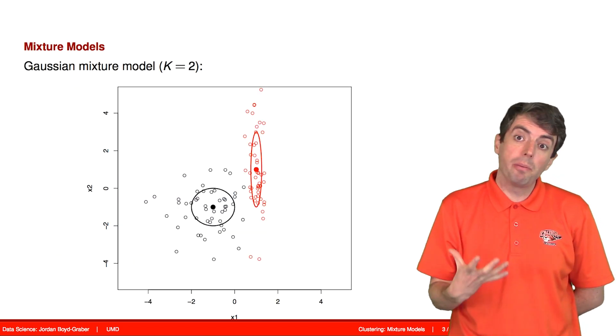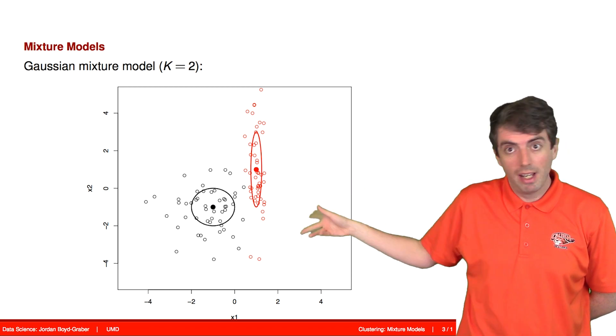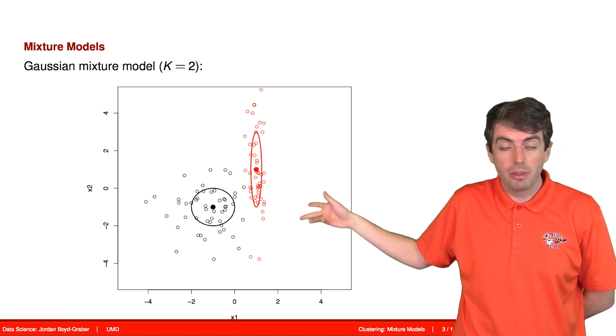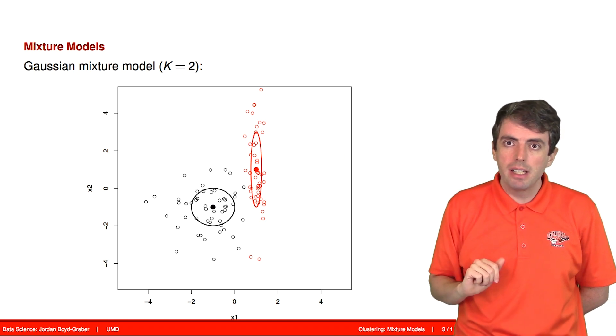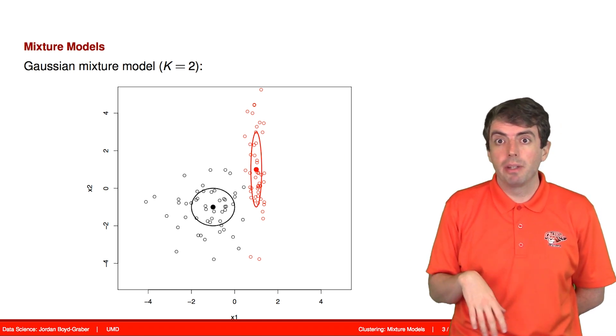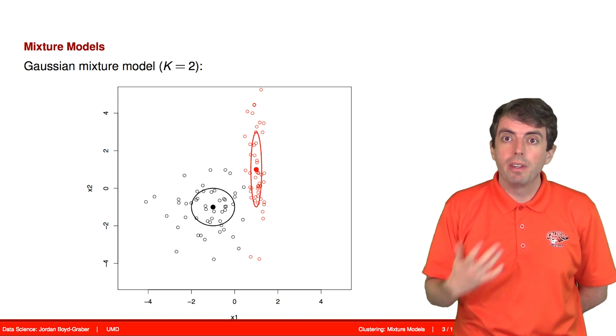And recall the reason that we want to do this is we want to be able to solve problems like this, where you have a circular shaped cluster, which we could capture with k-means, but we have the sausage shaped cluster up here that we couldn't capture with k-means. We need to capture its variance, which is possible with a Gaussian distribution.